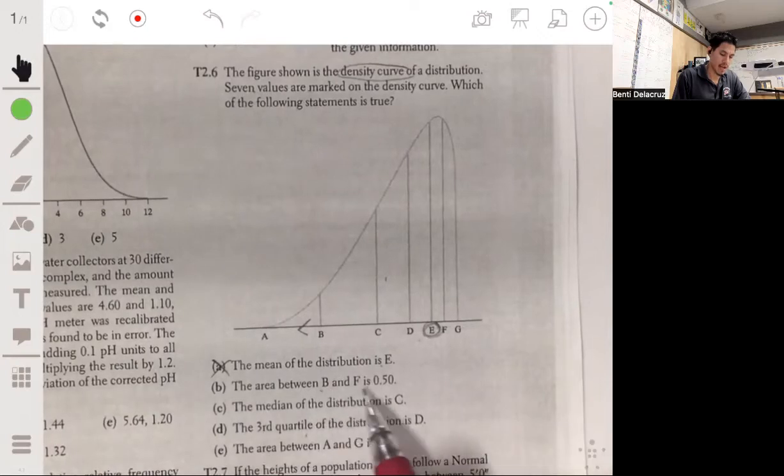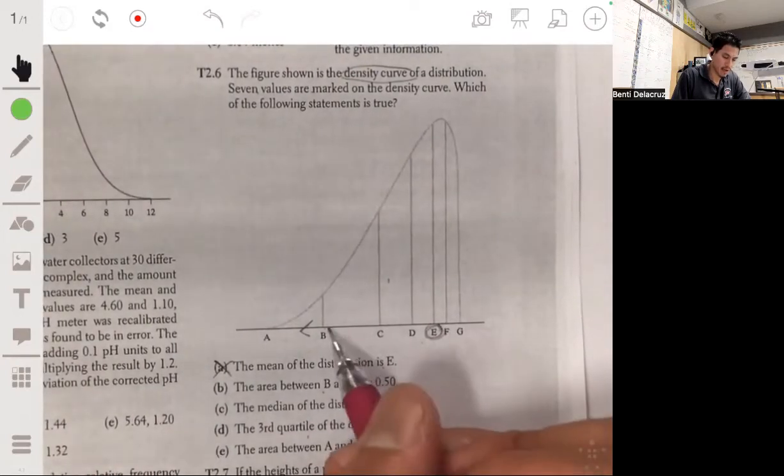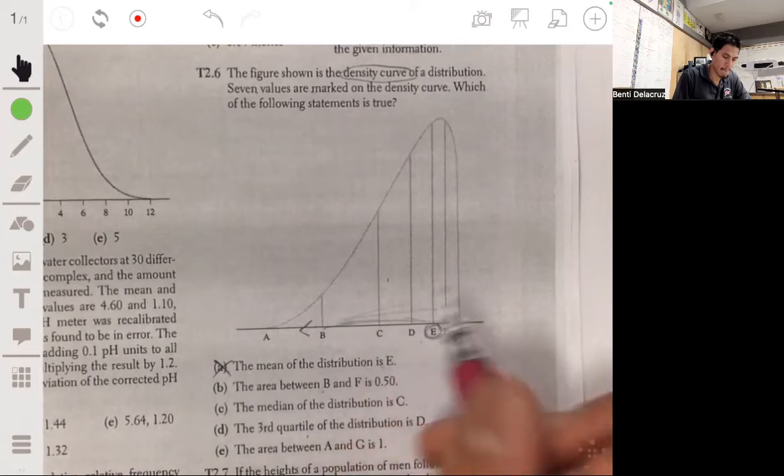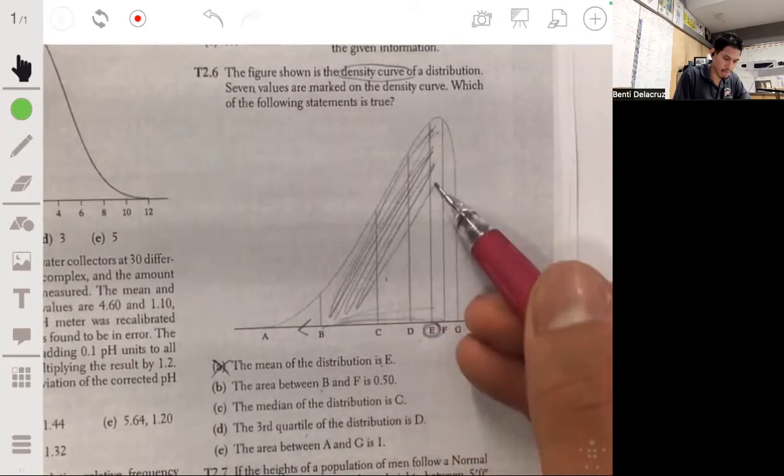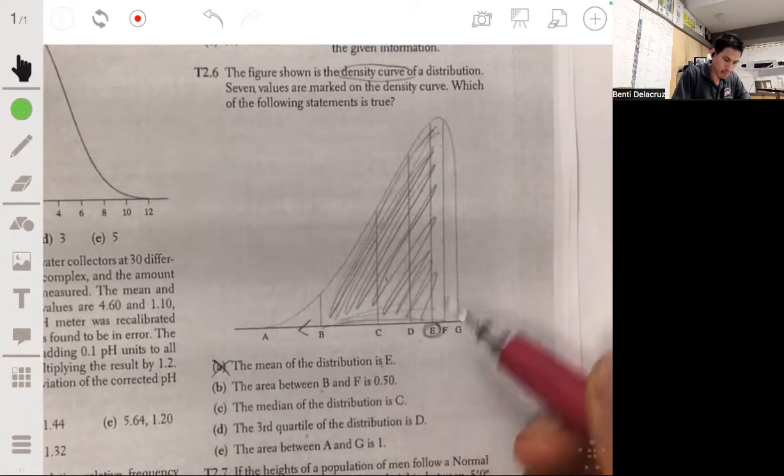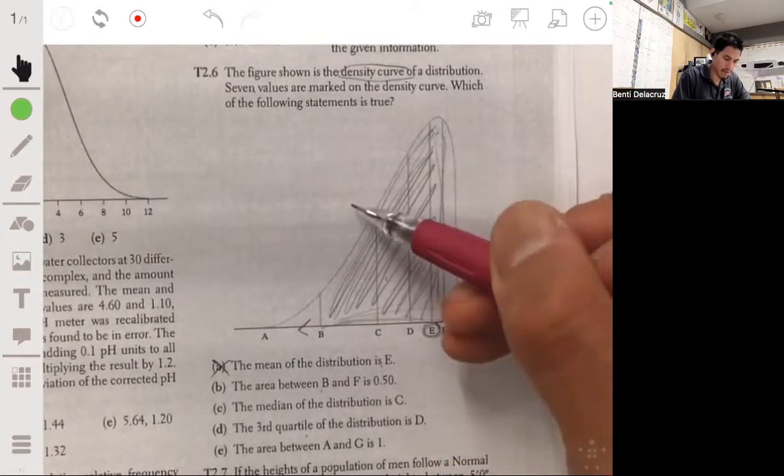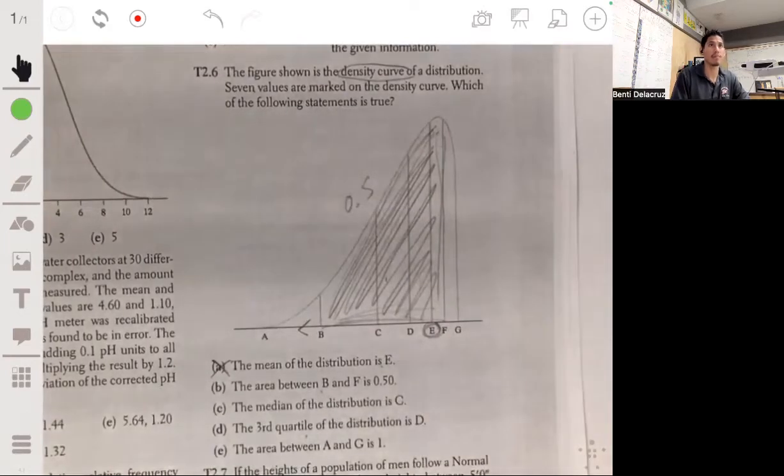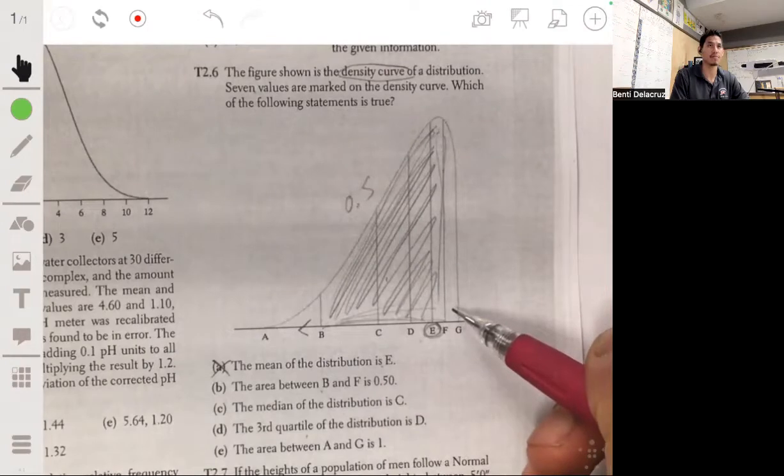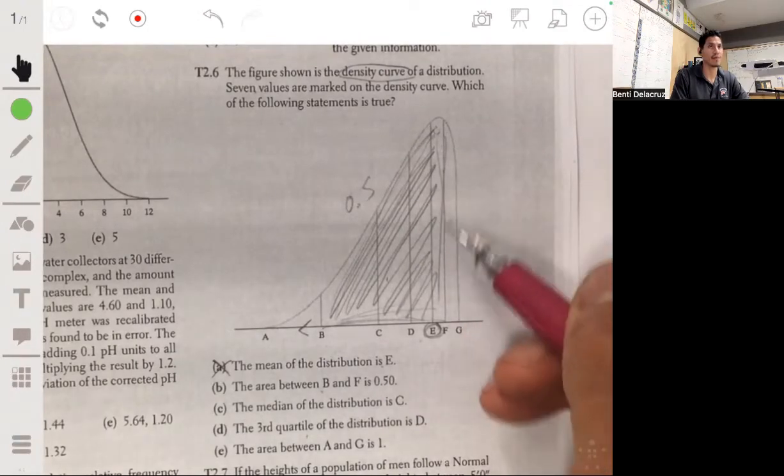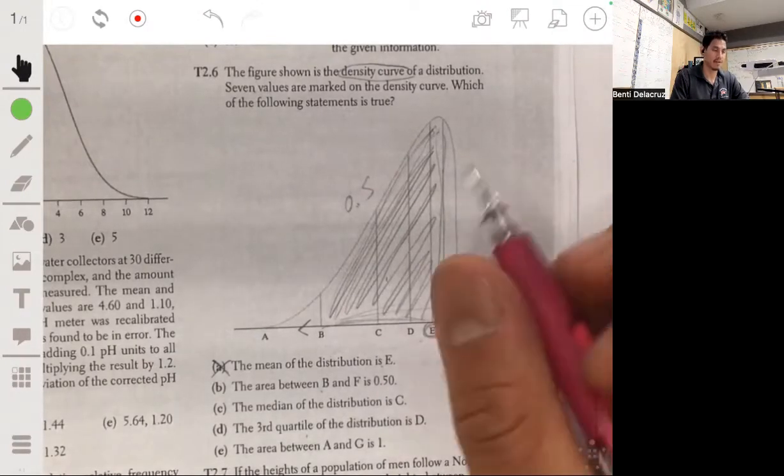The area between B and F is 0.5. So they're saying all this whole thing is 0.5. No way. Because the total area underneath the curve has to equal one. So that ain't half the whole thing. That is definitely wrong. 0.5 is not half of the total area.